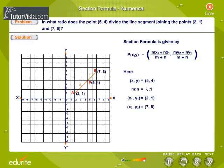Here, in this problem, (x,y) is equal to (5,4), m:n is equal to lambda:1, (x1,y1) is equal to (2,1), and (x2,y2) is equal to (7,6).